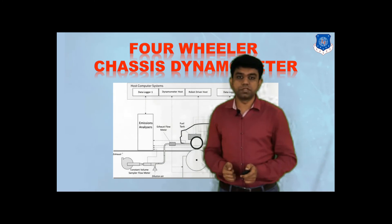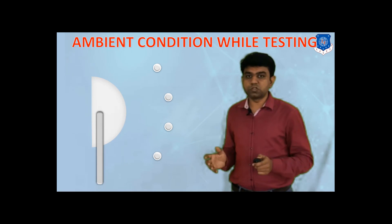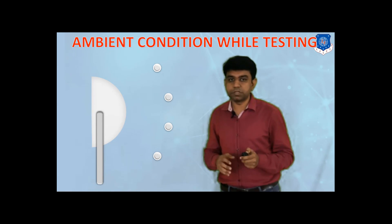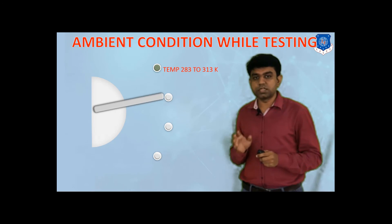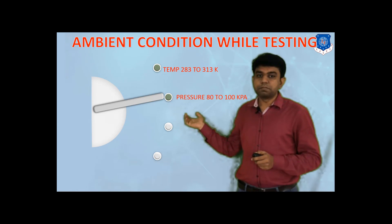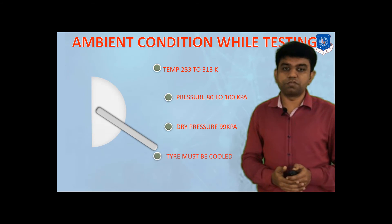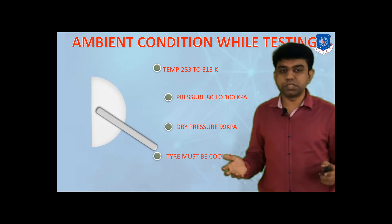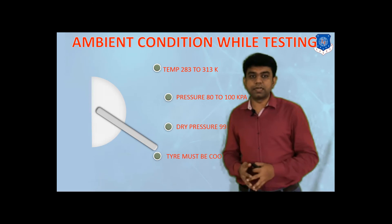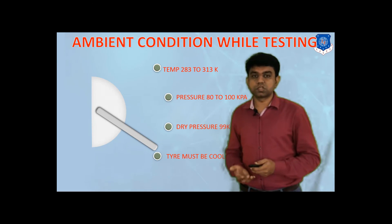One thing we need to take into account whenever we do this in-house testing is that we have control over the ambient conditions — the surrounding temperature and pressure are monitored and kept at specific quantities. Temperature is normally kept between 283 to 313 Kelvin. Pressure is kept at 80 to 100 kPa, and the atmosphere should have a dry pressure of 99 kPa. The tires must be in cold condition; we need to start from cold condition, and the vehicle should not have been driven before being taken directly into the lab.